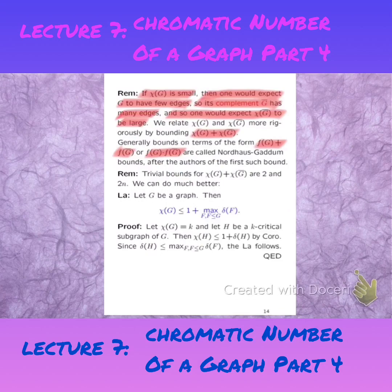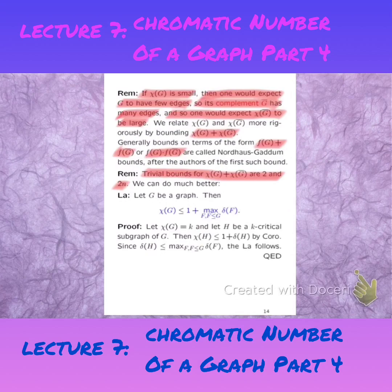The trivial bounds are 2 and 2N respectively. The smallest the chromatic number of a graph can become is 1, so adding the chromatic number of G and its complement is at least 2. The largest the chromatic number of a graph G can become is N, and adding the two brings you to 2N at the very most. But these bounds are not very good — one can actually do much better, which we will discuss.